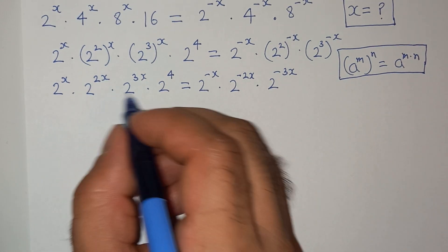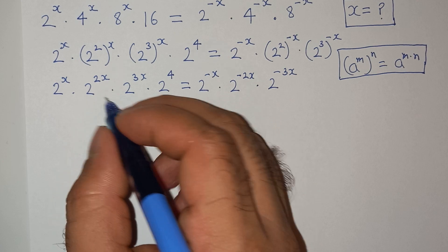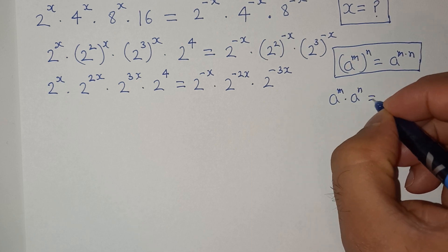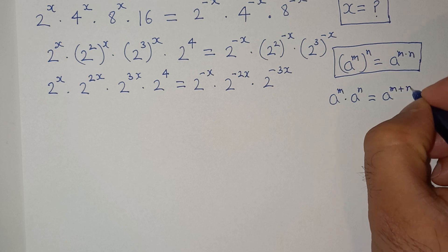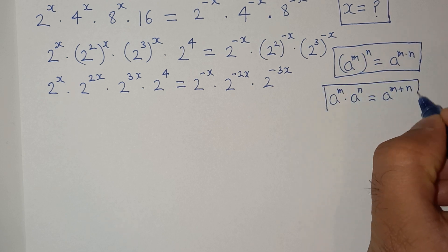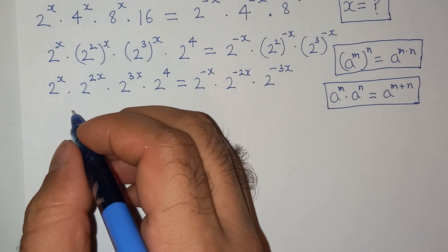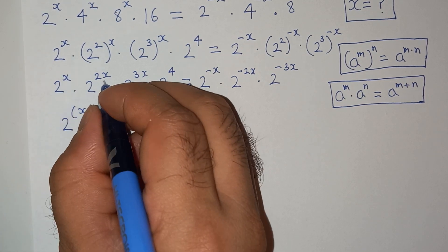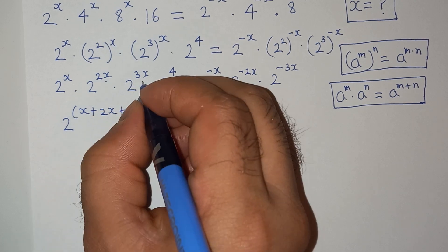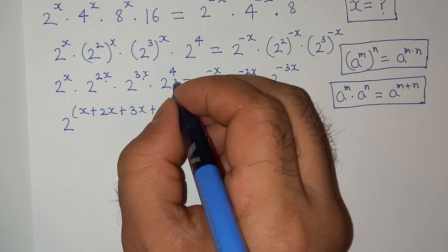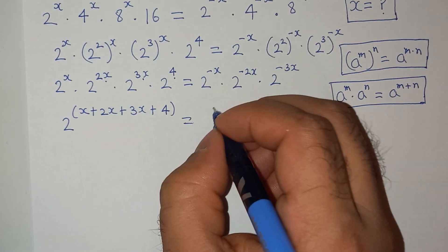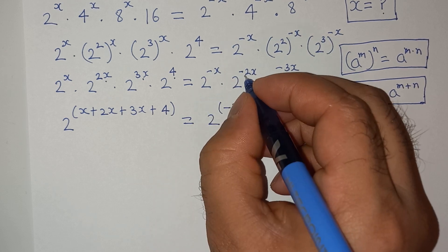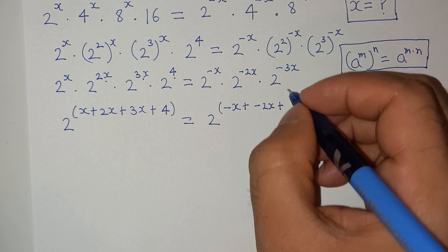As we see the bases are common, which is 2. So we can apply this exponential rule which is a power m multiplied a power n equals to a power m plus n. So this will be 2 power x plus 2x plus 3x plus 4 equals to 2 power minus x plus minus 2x plus minus 3x.